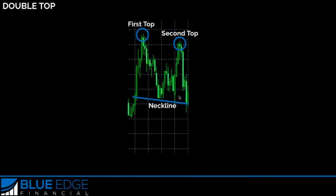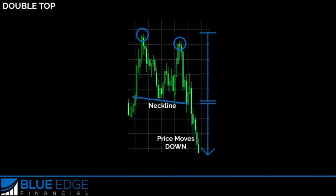The neckline goes down through the middle where this acts as support, and then over to the other side. Once price breaks through this line it's a good confirmation that it has in fact reversed and is going to start going down, since this is acting as support in the middle of the two tops. You can see that had we placed our entry order right here below the neckline, that would have been a great opportunity since price shot down.